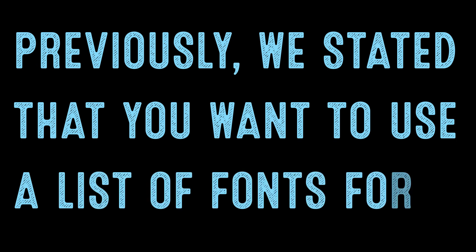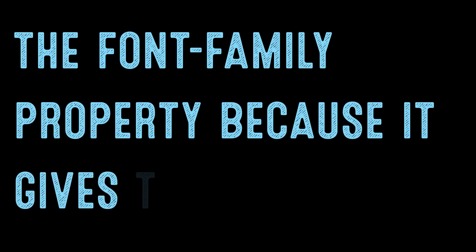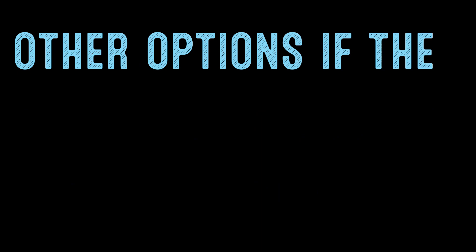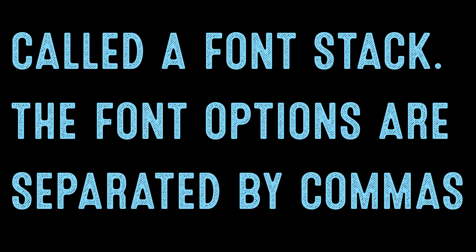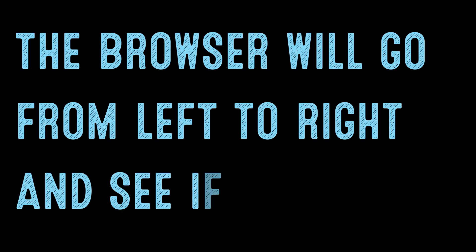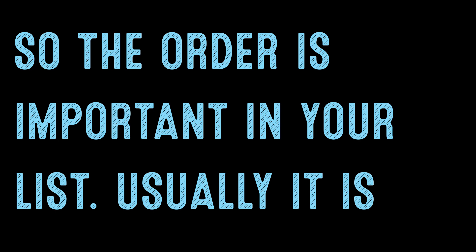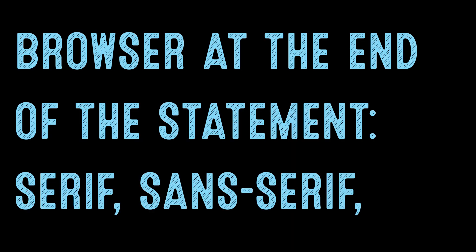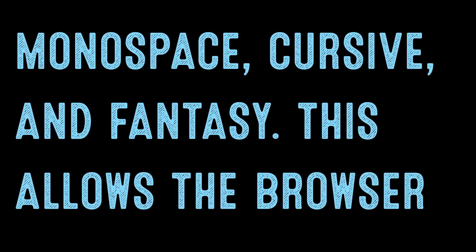Previously, we stated that you want to use a list of fonts for the font-family property because it gives the browser other options if the chosen font is unavailable. This is called a font stack. The font options are separated by commas. The browser will go from left to right and see if each is available, choosing the first available font to display — so the order is important in your list. Usually, it is best to add one of the five categories recognized by the browser at the end of the statement — serif, sans-serif, monospace, cursive, or fantasy — so the browser can choose an available font on the system that is similar to what you desire.